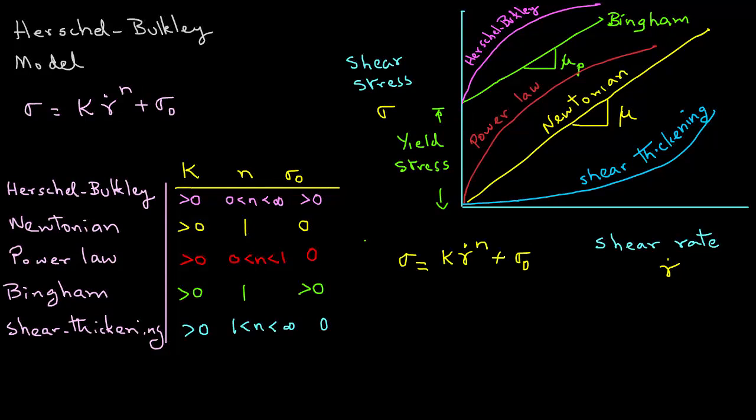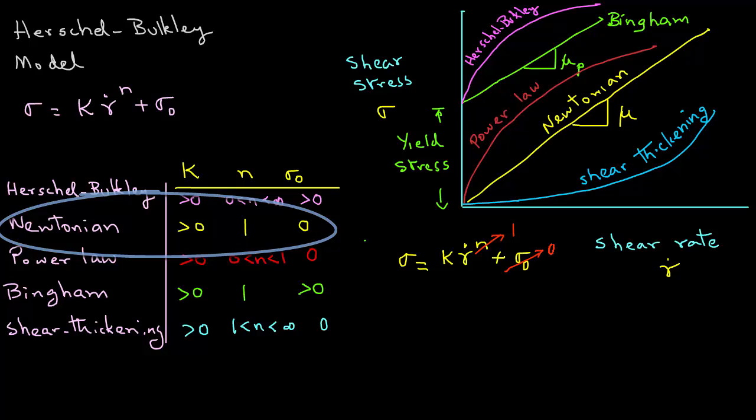For example, in the case of a Newtonian liquid, if we substitute n equal to one and sigma zero equal to zero, that gives you sigma equals k times gamma dot, where k, in the case of a Newtonian liquid, was the viscosity.